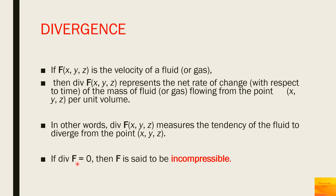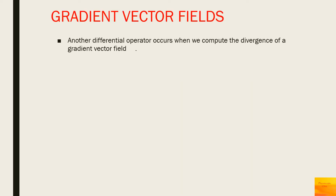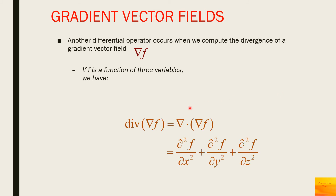If the divergence of a function is 0, then the function F̄ is said to be incompressible, also called a solenoidal field. The divergence of the gradient has also been shown: ∇·(∇f) = ∂²f/∂x² + ∂²f/∂y² + ∂²f/∂z².